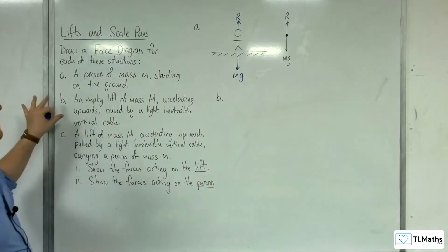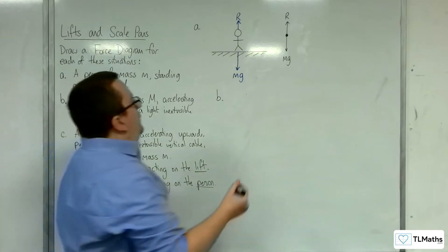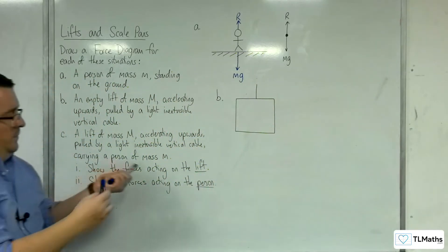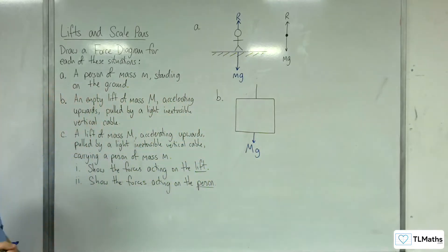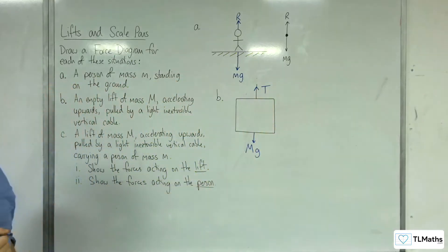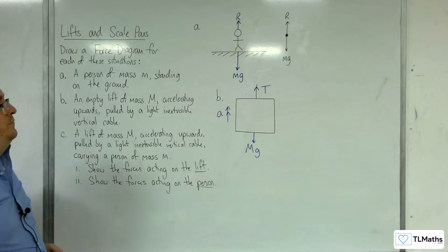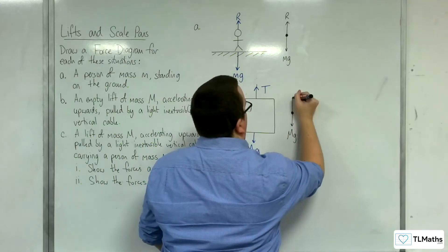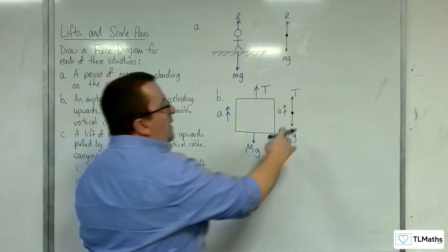For part B, we've got an empty lift of mass capital M accelerating upwards, pulled by a light inextensible vertical cable. The weight of the lift works vertically downwards, which is capital M times gravity, Mg. You'll also have the tension T in the cable pulling it upwards, and it's accelerating upwards. Drawing this as a particle: capital Mg downwards, T upwards, and accelerating upwards.